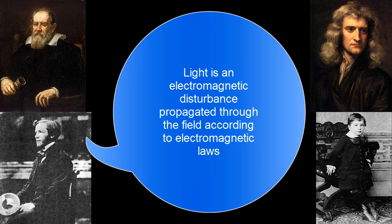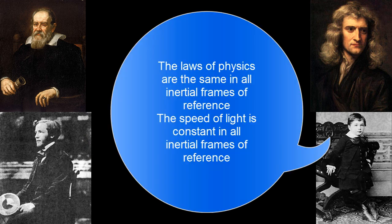James Clark Maxwell stated that light is an electromagnetic disturbance propagated through the field according to electromagnetic laws. And this led to the calculation of the speed of light. Albert Einstein stated two things: The laws of physics are the same in all inertial frames of reference, and the speed of light is constant in all inertial frames of reference.